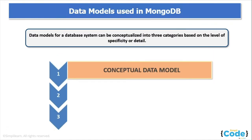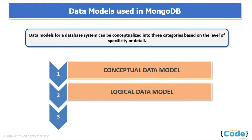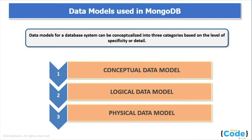The first is the conceptual data model, which explains what the system should contain and how it is related. This model is usually built with the help of users and stakeholders, represents the application's business logic, and is often used as the basis for subsequent models. Next is the logical data model, which describes how the data will be structured. In this model, relationships between entities are established at a high level, and attributes for the entities are listed. Finally, the physical data model represents how the data will be stored in a specific database — in this case MongoDB — where we establish primary and secondary relationships between data in documents, define data types for each field, and produce the database schema.